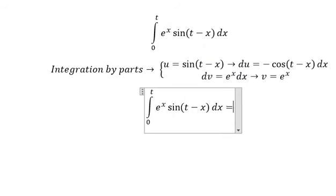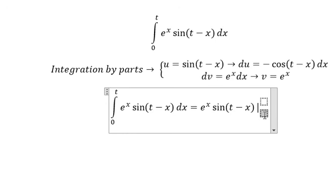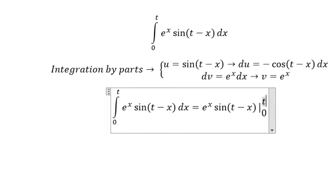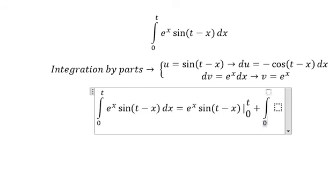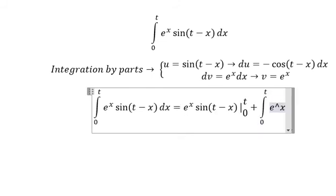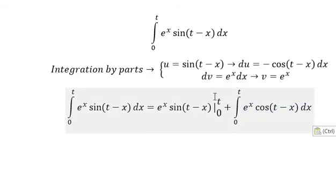So we have u multiplied by v, and we put the boundary. e to the power of x dx from 0 to t. Because we have a negative in here, you get positive. We have e to the power of x multiply with this one. So we put t in here, you get sine zero which is zero. We put number zero in here, so you get sine t.